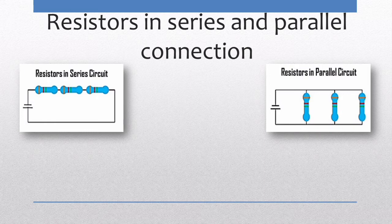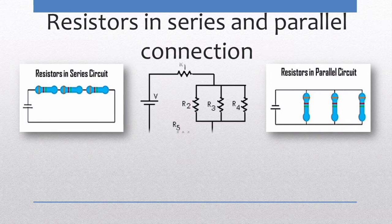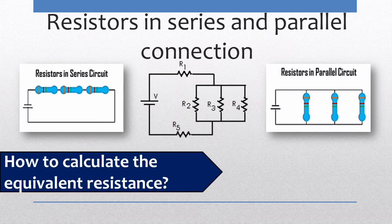Apart from potential difference, current in a circuit depends on the resistance of the circuit. In electrical circuits of radios, televisions, and other similar devices, it is usually necessary to combine two or more resistances to get the required current. Let's learn to calculate the equivalent resistance when resistors are connected in series or in parallel.